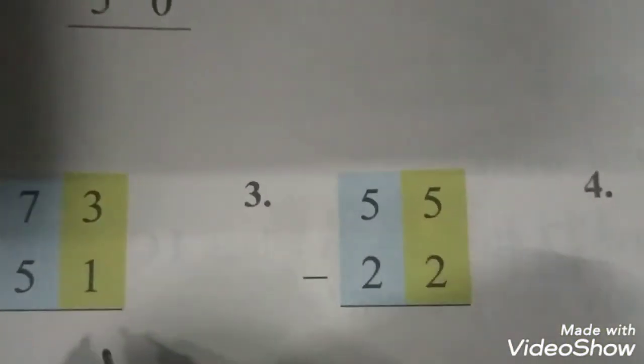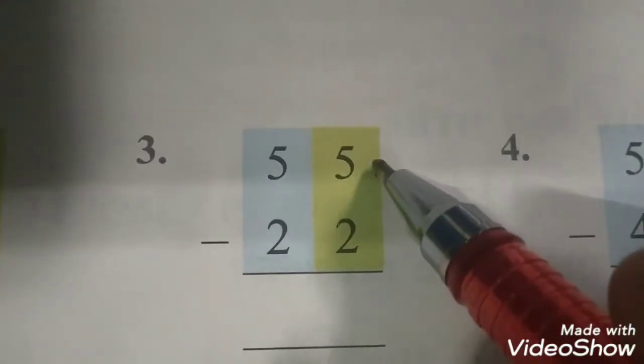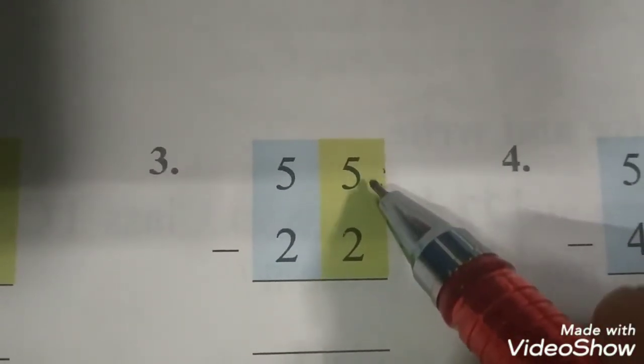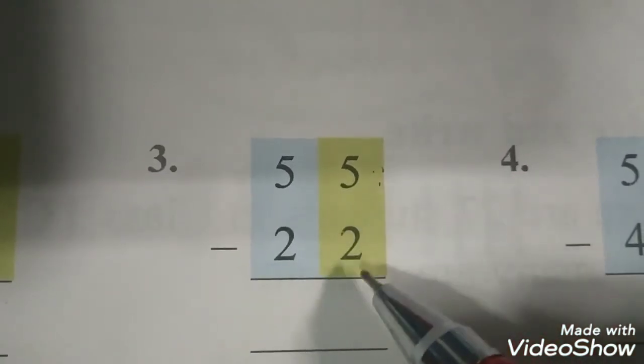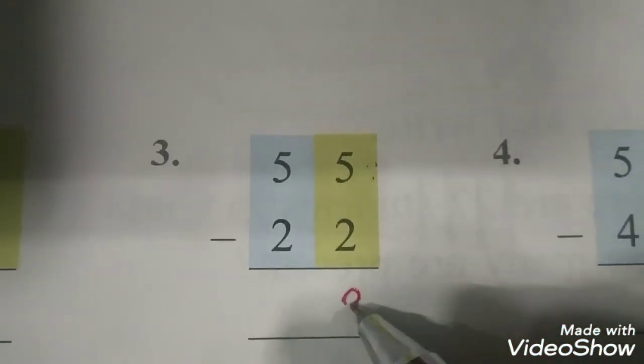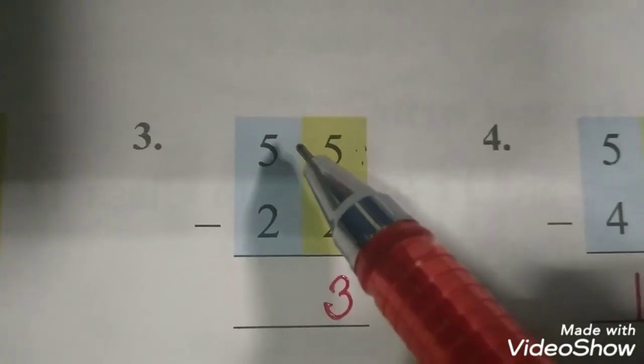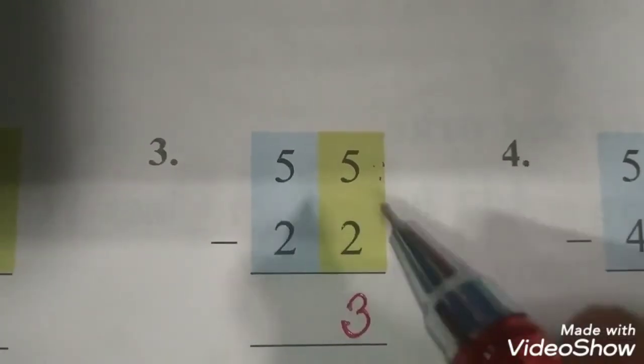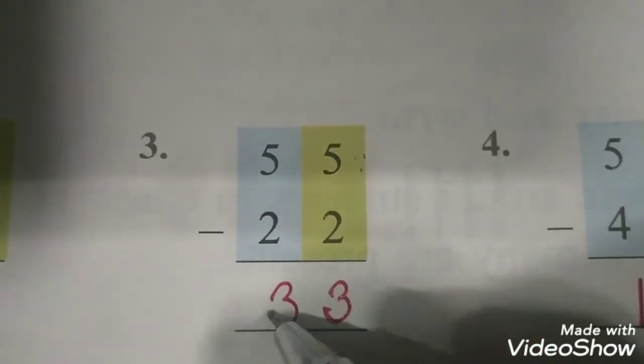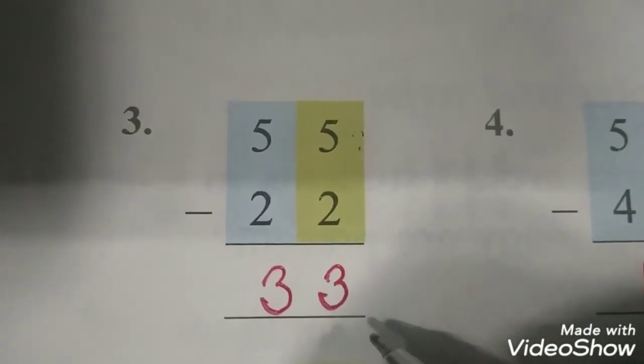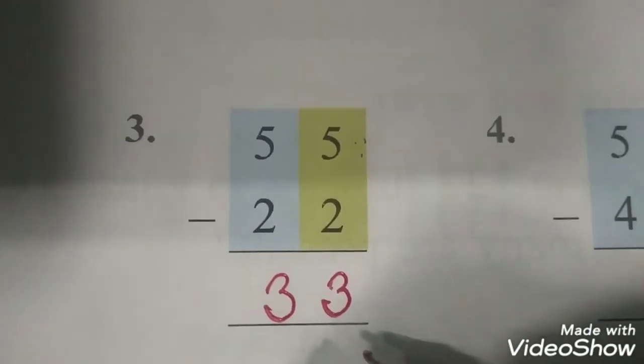Let's solve this one also. We have 55 minus 22. So we subtract from ones, ones from ones. 5 minus 2, the answer is 3. Again 5 minus 2, again 3. So answer is 33. Right beta?